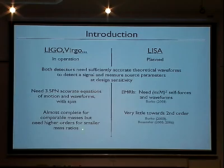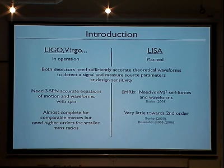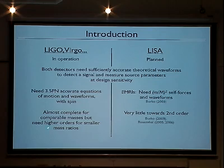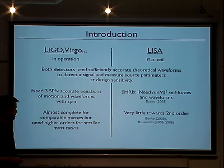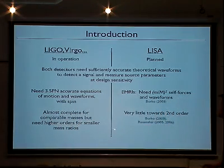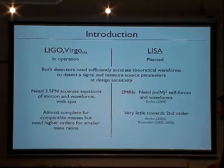Of course, if you increase the mass ratio, you'll need to go to higher orders because the smaller compact object is going at higher velocities. So while traditional methods may be very difficult to apply in that case, the effective field theory method might be very efficient to use for higher order calculations.